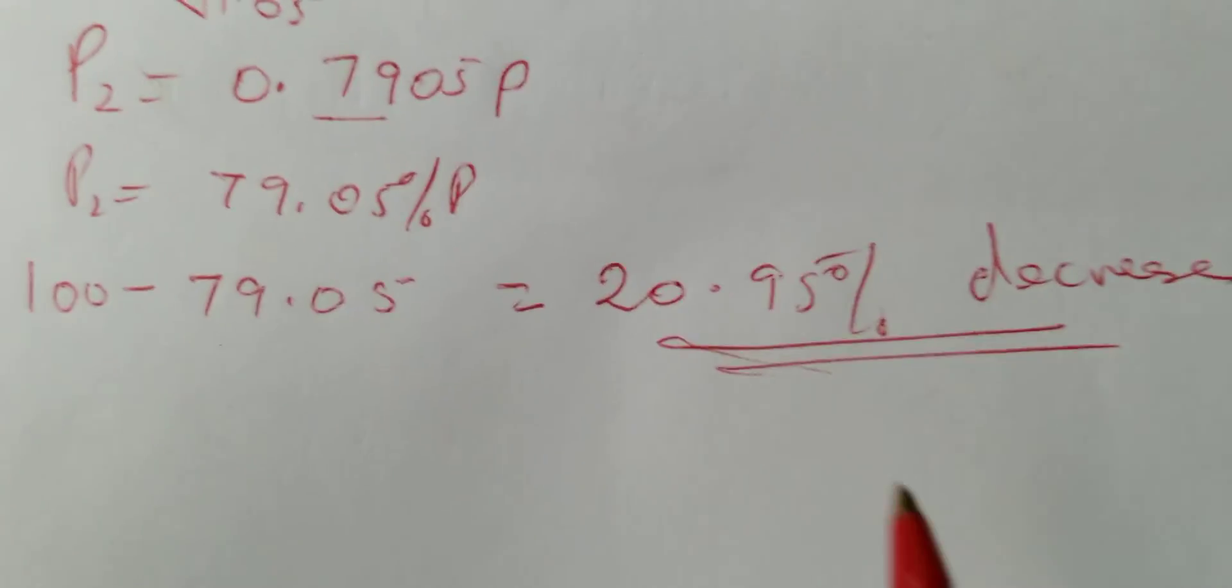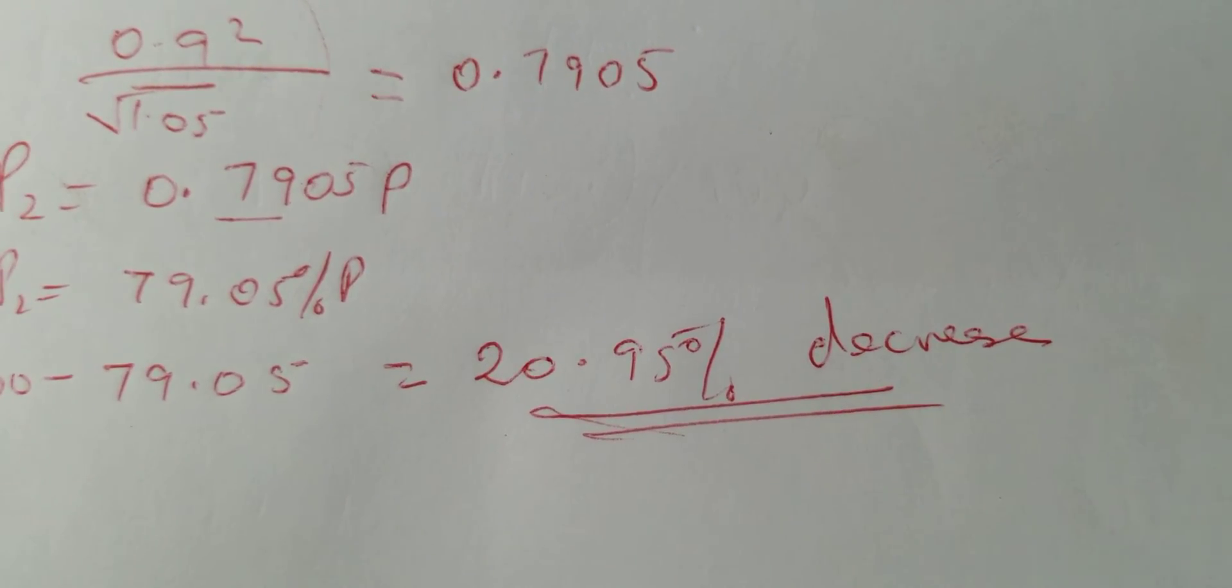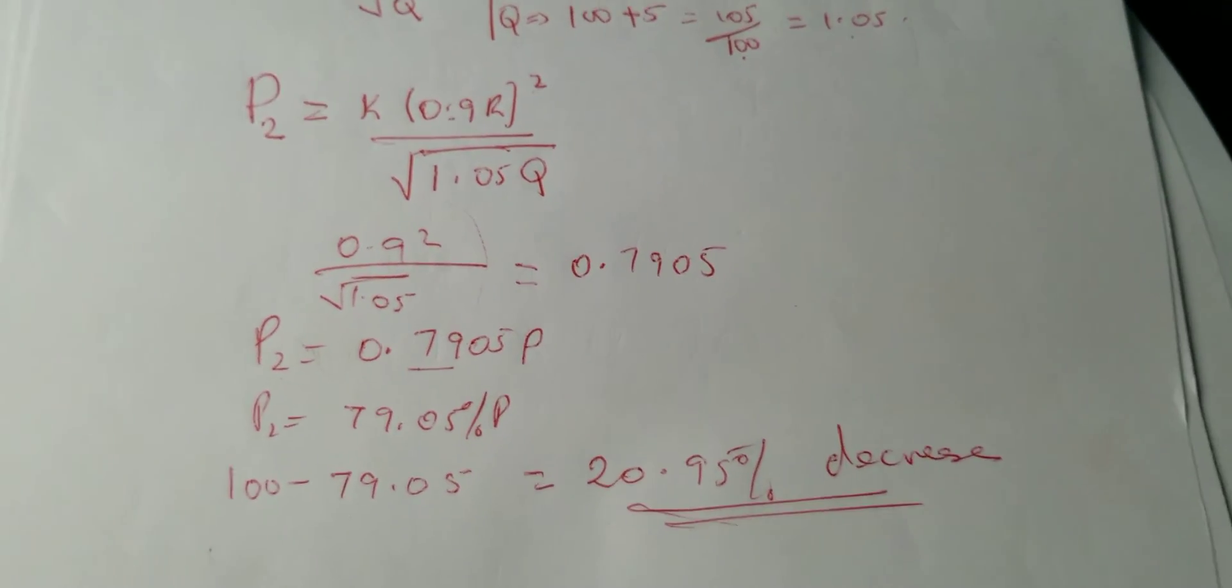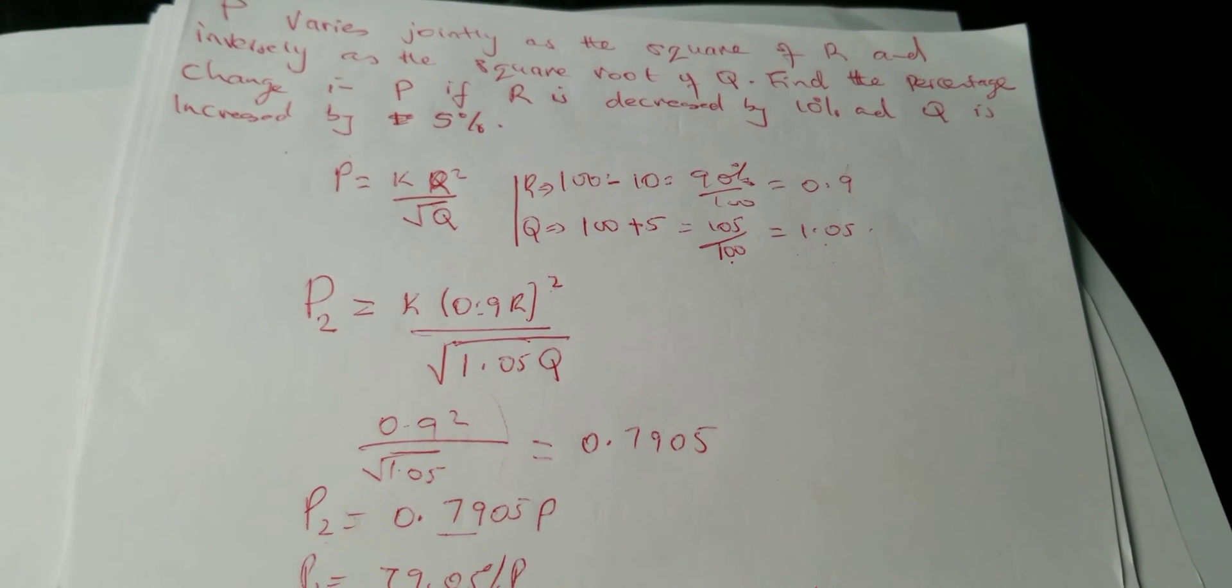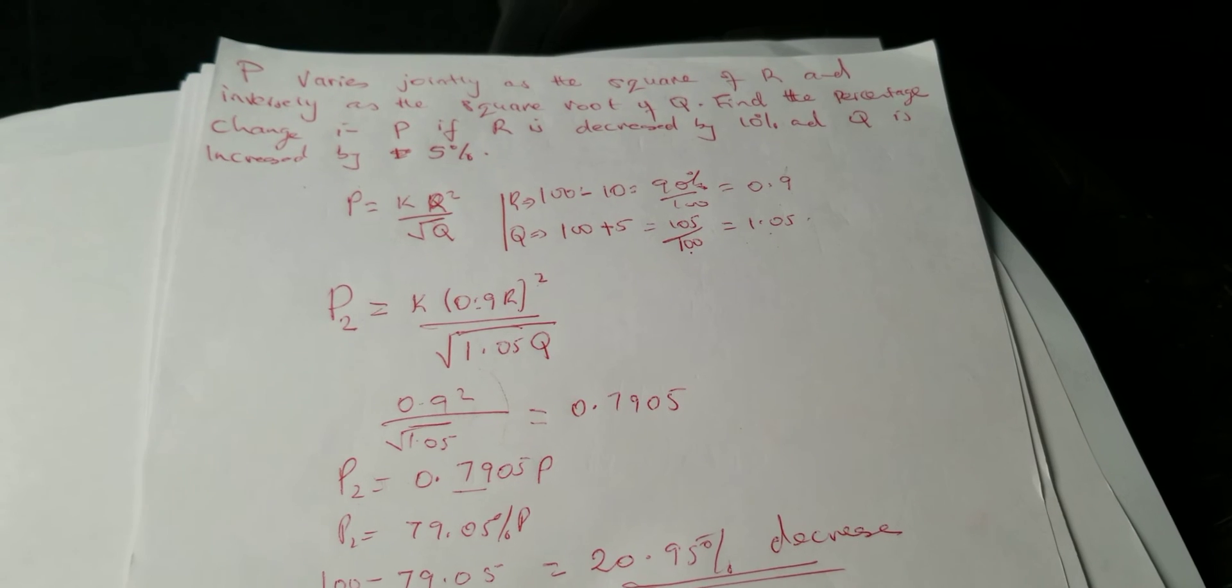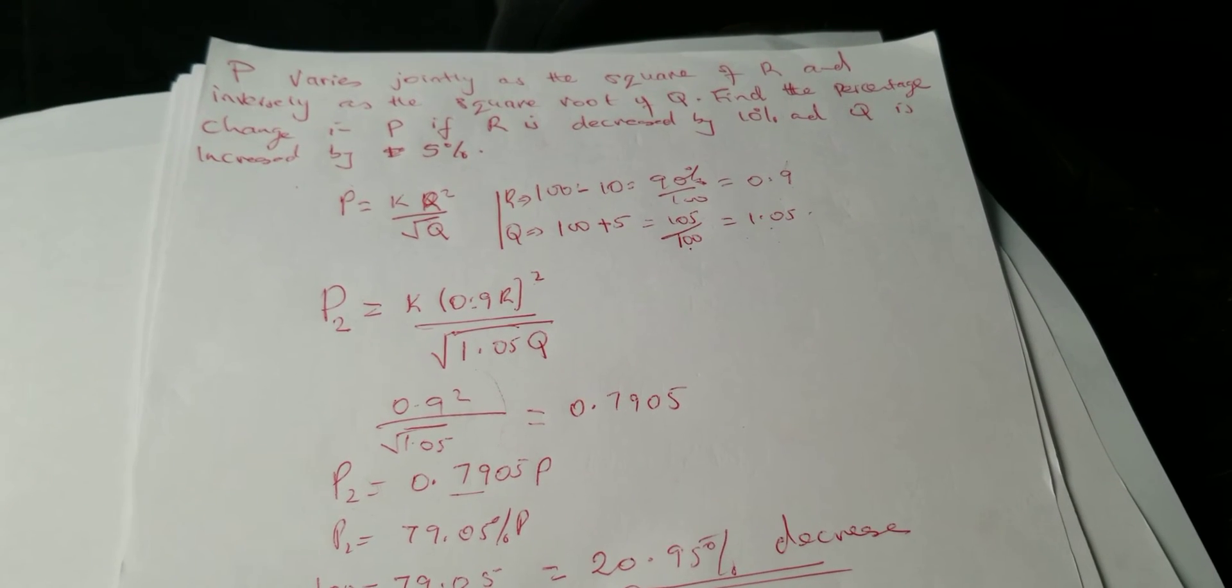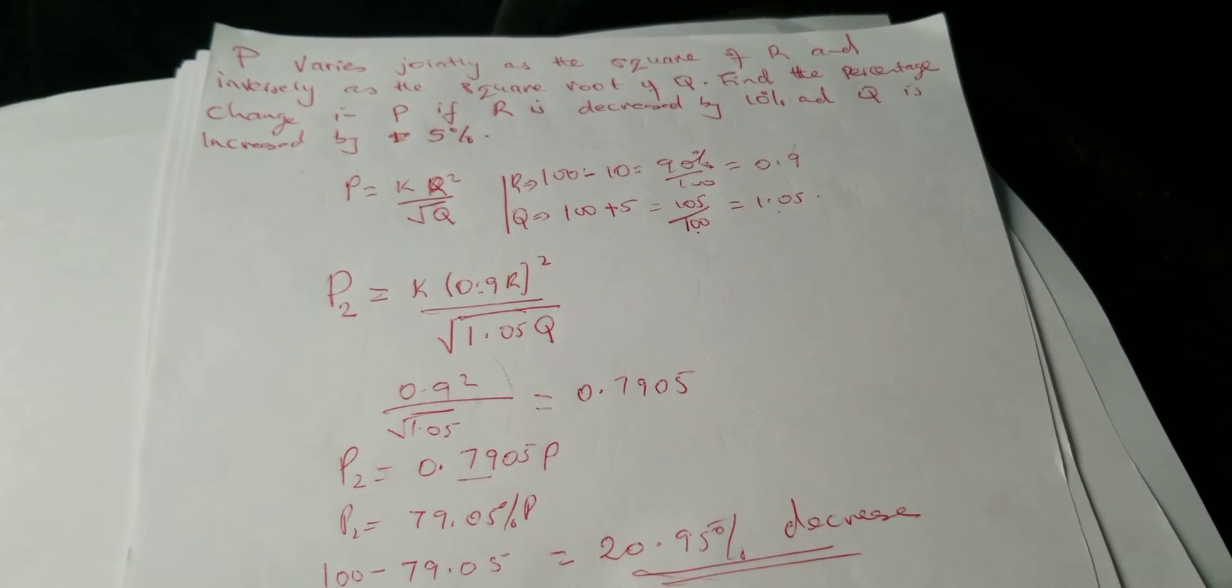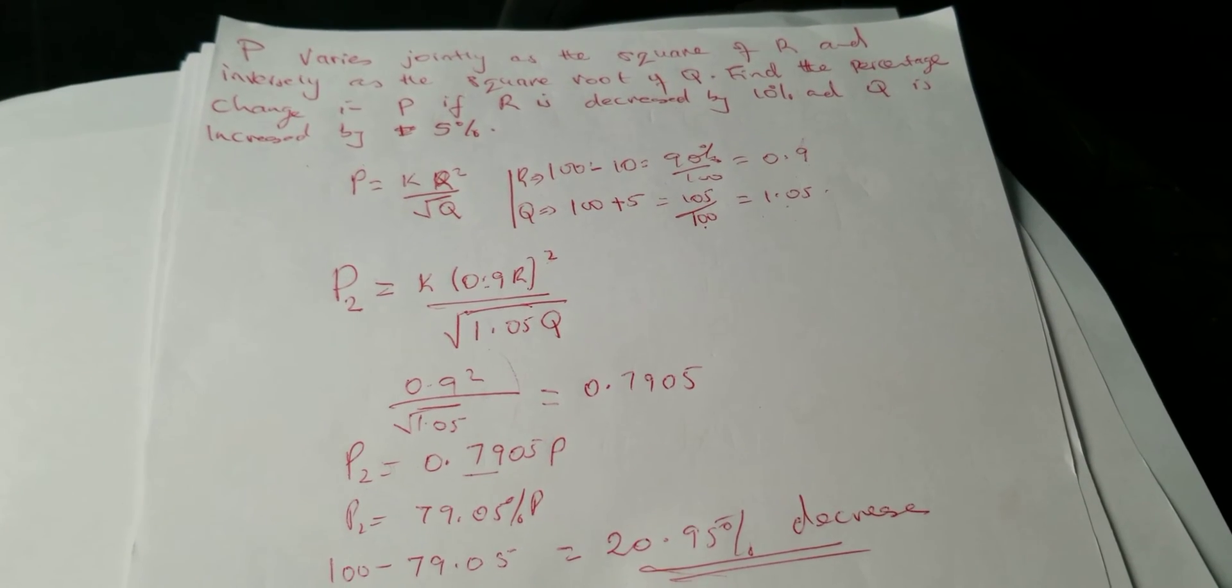So there is a 20.95 percent decrease in P. That's how you work it out. The most important thing here is the numbers—that is the 10 percent decrease in R and the 5 percent increase in Q.